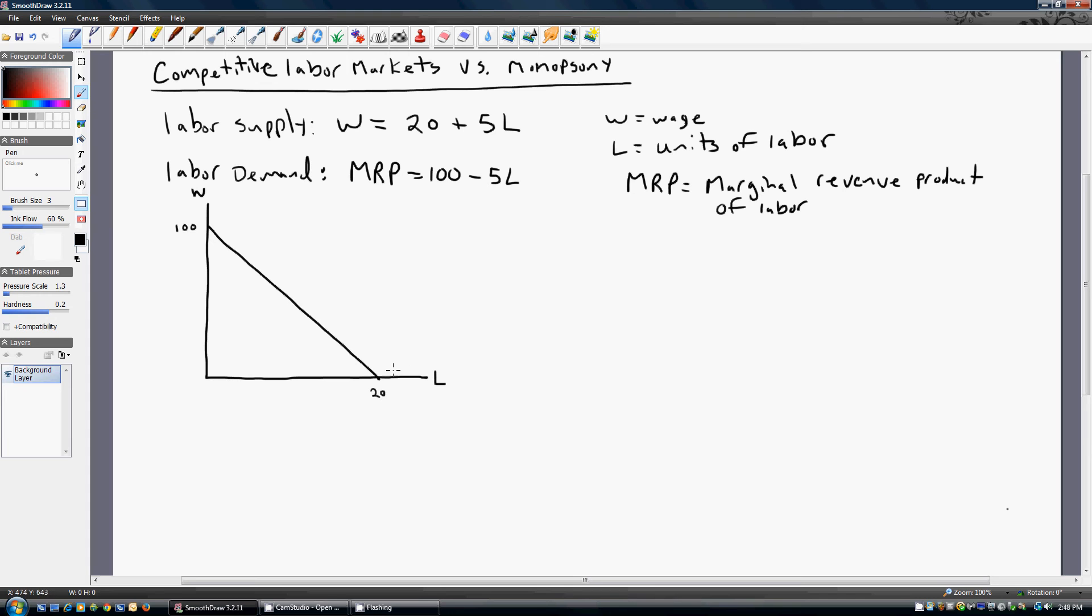So if L is 20, marginal revenue product is 0. When L is 0, marginal revenue product is 100. So that's our labor demand equation. And if we were to graph the labor supply equation, got a vertical intercept over here, doing something like that. Okay, so that's our labor supply equation.